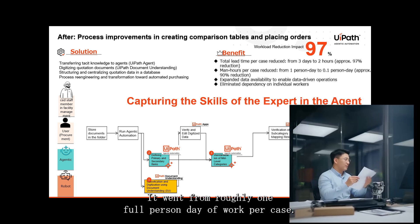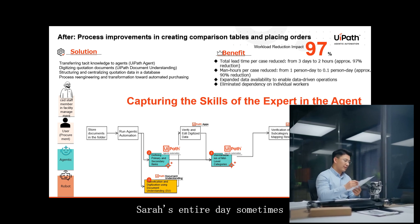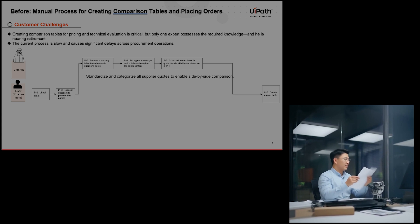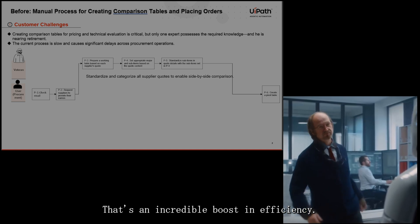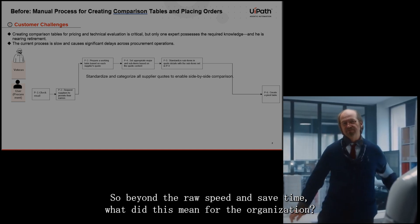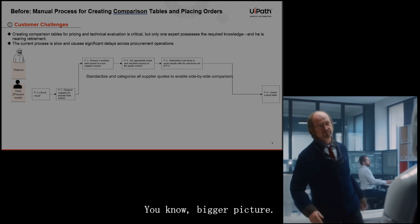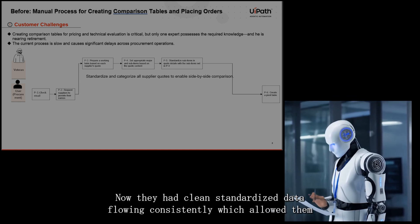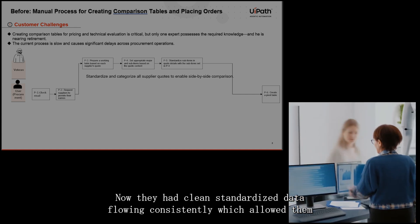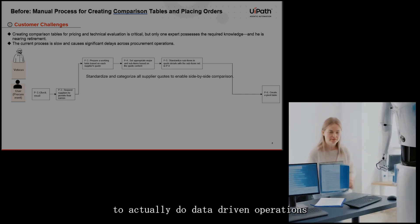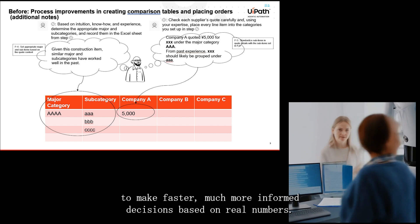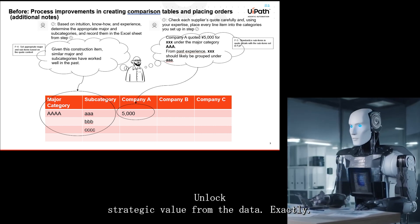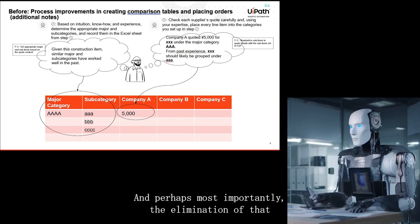The actual human effort per case saw a similar story — about a 90% reduction. It went from roughly one full person-day of work per case down to just 0.1 person days — a tenth of the time. Beyond the raw speed, they now had clean, standardized data flowing consistently, allowing them to do data-driven operations and make faster, much more informed decisions based on real numbers.